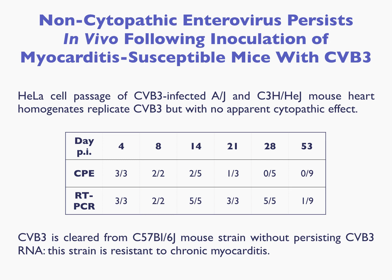In our own studies, we replicated a finding from the murine model of Coxsackievirus B3 myocarditis — the model for enterovirus myocarditis — in that at day 4, day 8, day 14, and day 21 after mice were inoculated with Coxsackievirus B3, hearts passed in culture produced a high amount of cytopathic effect. But when you went out to the chronic myocarditis stage — day 28 and longer — you don't find any cytopathic effect in those cultures.